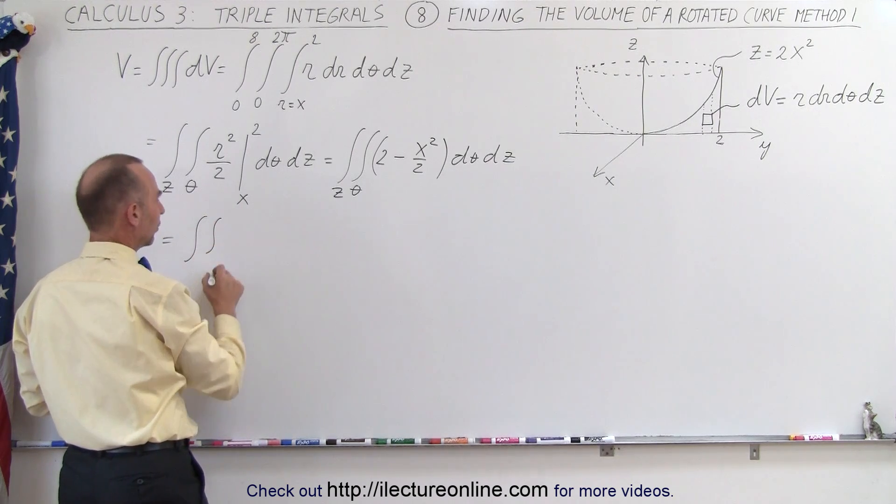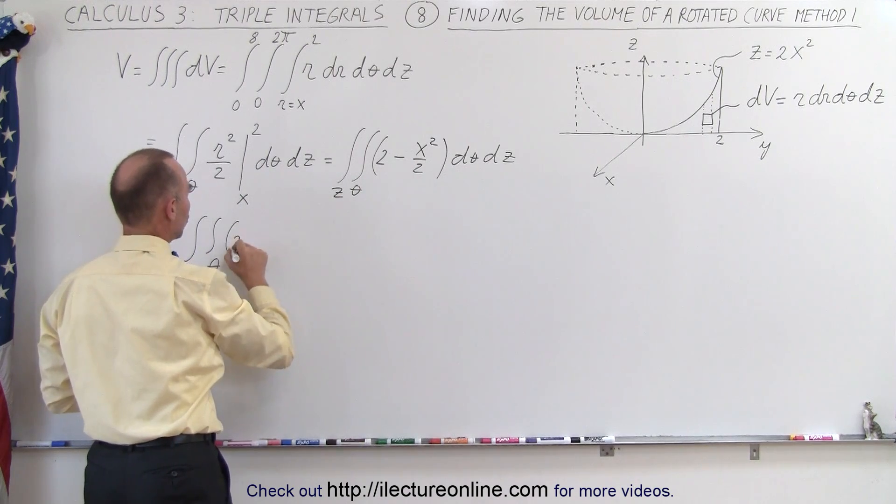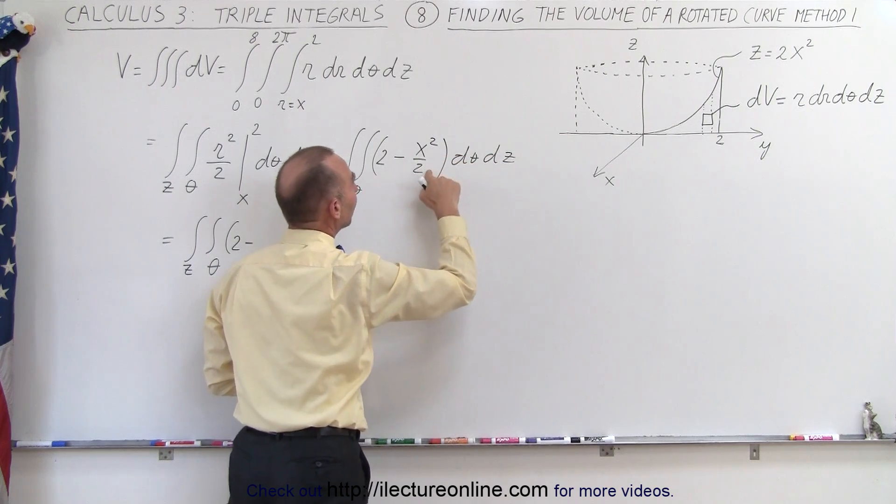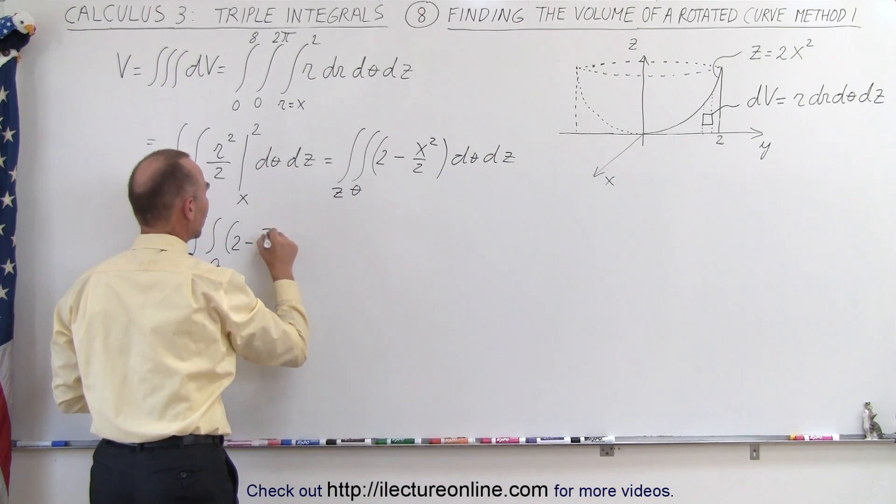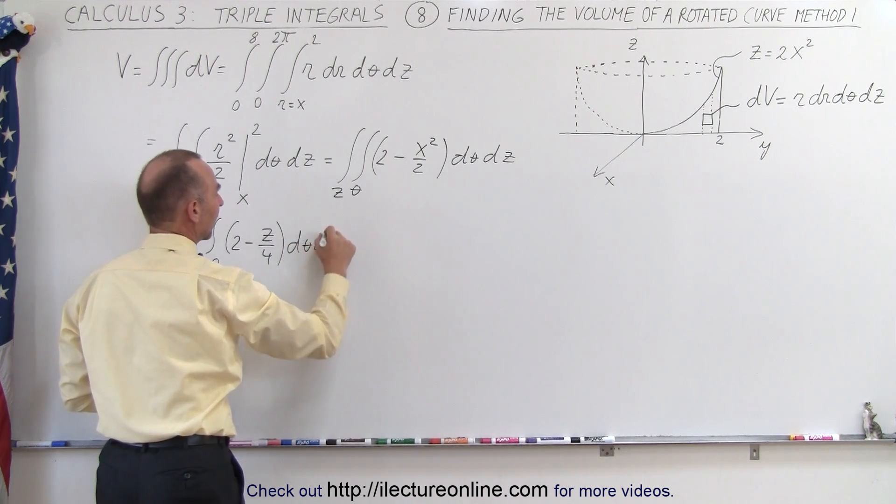This is equal to the double integral over θ and z, and then we get 2 minus—so instead of x squared we have z divided by 2 and divided by 2—we get minus z divided by 4, times dθ times dz.